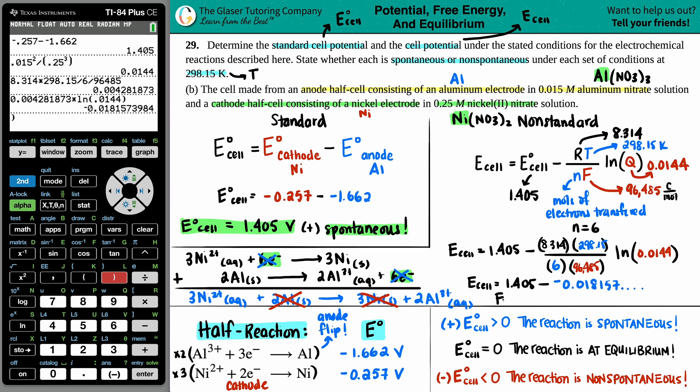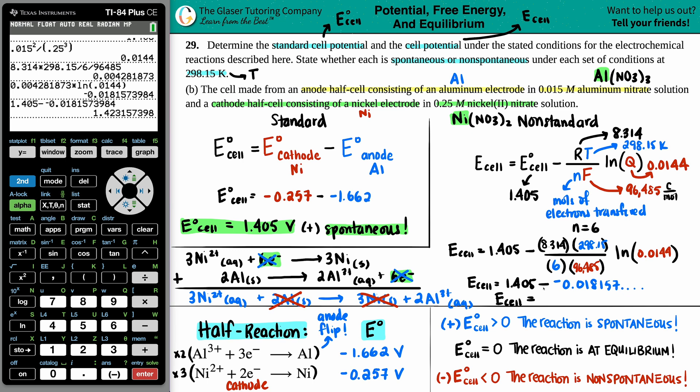So now we're ready to say now, I will clear this out. I will do 1.405 minus a negative. Or actually, what I will do is I will just say 1.405 minus, pull this whole number down. The negative's in there already. And there we go. And I will say 1.423 volts. And now once again, is this spontaneous or non-spontaneous? It's still a positive value. So we are still spontaneous. And with this case, we are actually more spontaneous than the standard value. The standard was only 1.405. We went up a little bit. So it's even more spontaneous under these conditions. And that's it.